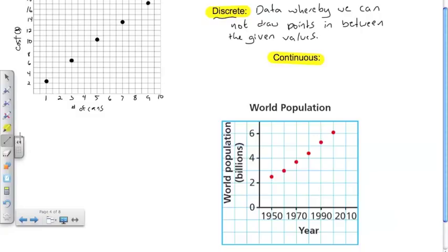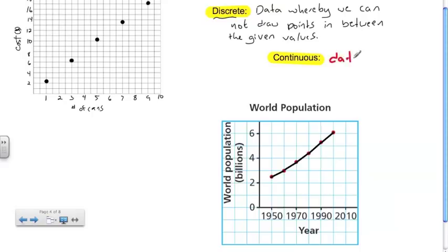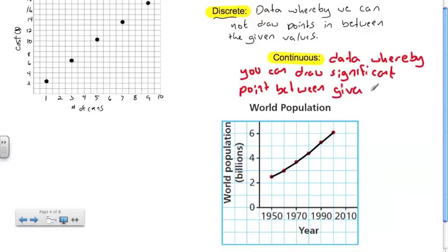It would make sense that we would have values between these plot points. In that case, it would make sense to draw a line between these, because there are significant values between these points. Therefore, we call this a continuous graph or continuous values. Continuous values is data whereby you can draw significant points between given values.